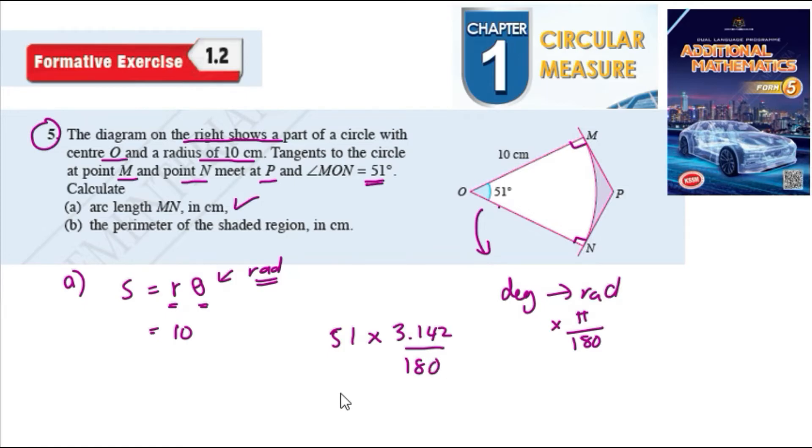So here we get 0.8902 radian. So we have the radian, we have theta here 0.8902.